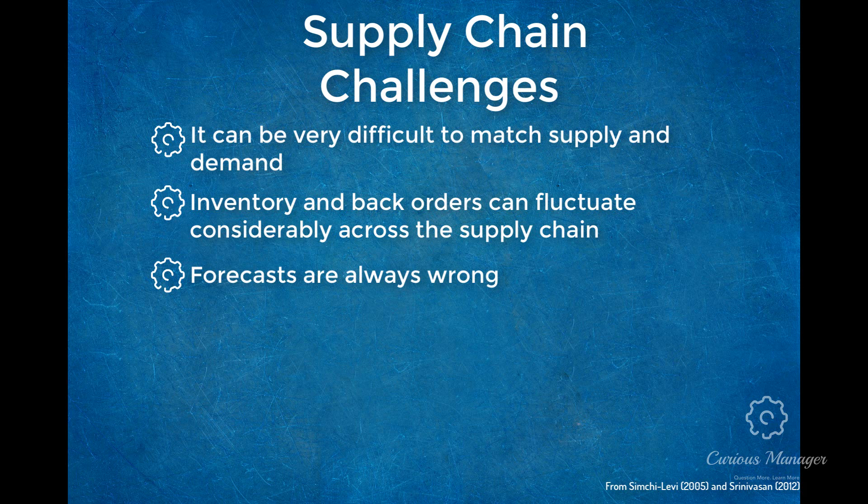Number three: forecasts are always wrong. No forecast, no matter how much data may be provided, can be 100% accurate. Therefore, supply chains that rely solely on demand forecasting risk fluctuations in inventory relative to the amount of variation in the forecast. In some cases, it can be beneficial to work with the customer to have set production levels agreed upon before the product is scheduled, which helps offset much of the risk borne by both the customer and the retailer.